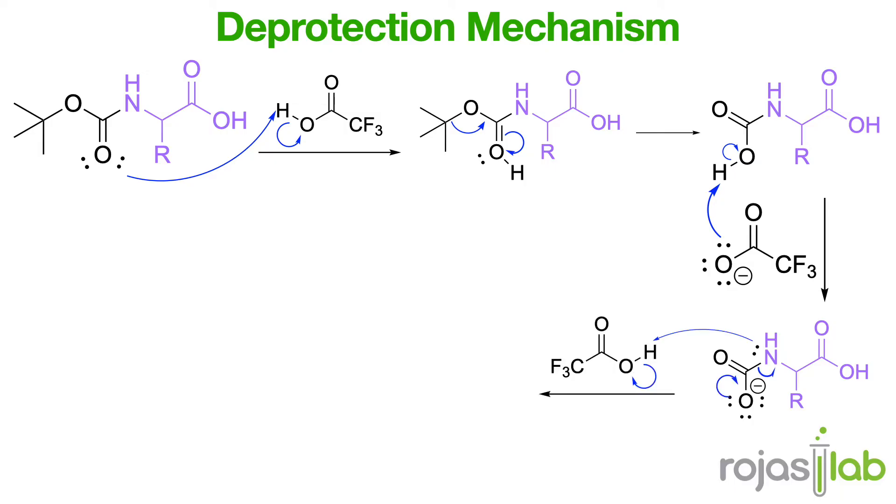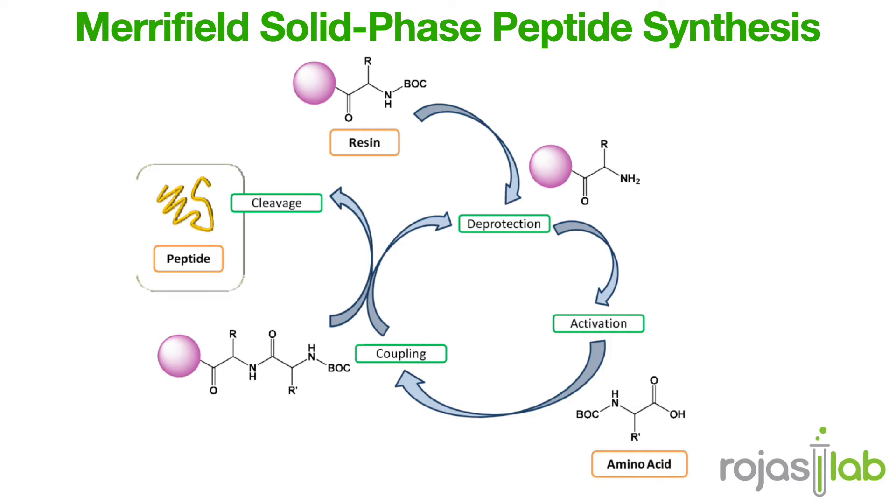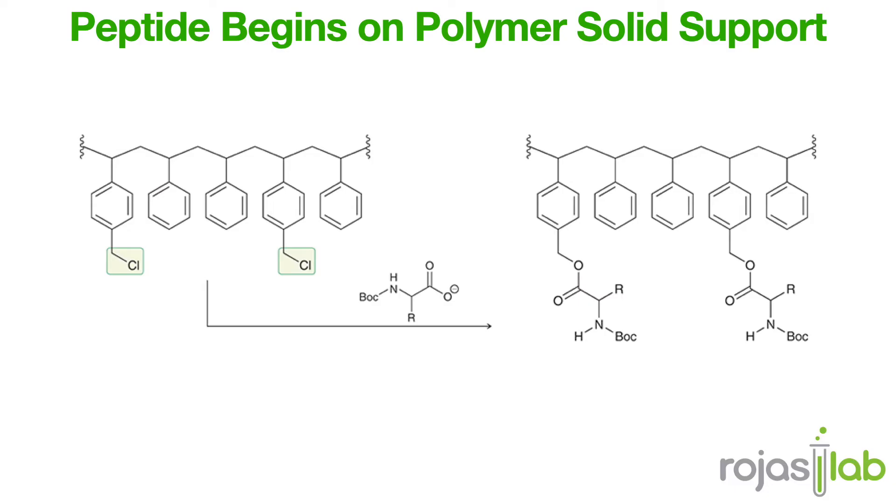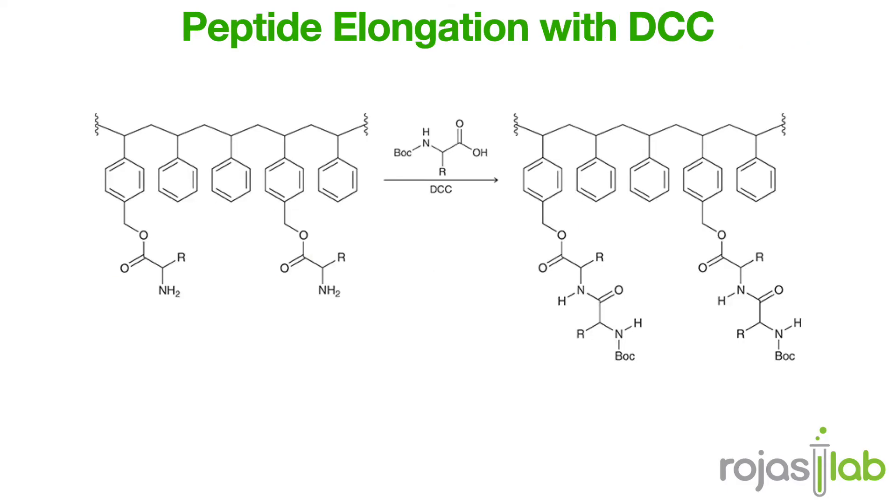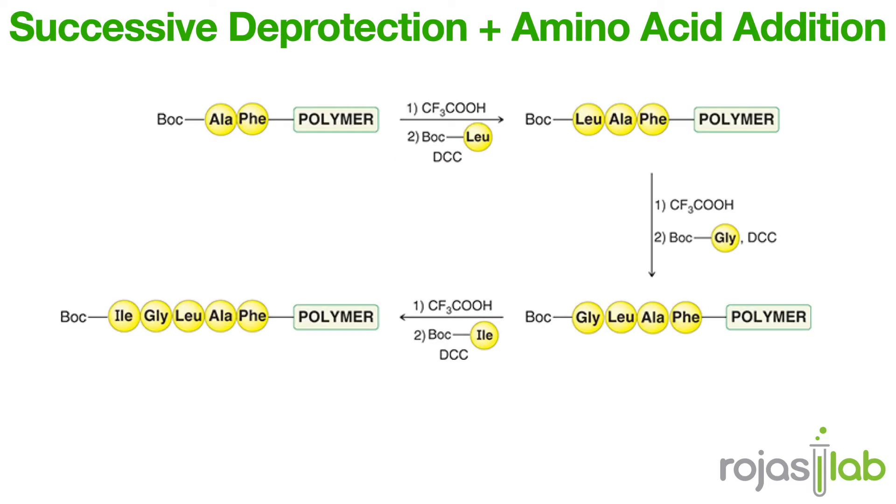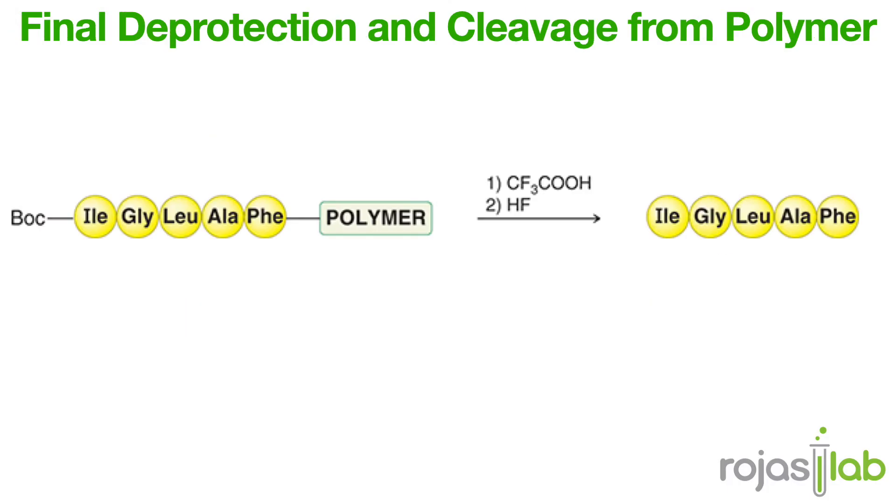In Merrifield synthesis, peptides are synthesized through solid-phase peptide synthesis, or SPPS for short. This method revolutionized peptide synthesis by enabling the stepwise assembly of peptides on a solid support, which is typically a resin bead, like a polymer. The process begins with the attachment of the C-terminal amino acid to the resin via a linker. Then, each subsequent amino acid is added one at a time, with the peptide growing in the C-to-N direction, allowing it to react with the amino group of the growing peptide chain. After each coupling step, the resin is washed to remove any unreacted reagents. Cleavage from the resin and removal of the protecting groups yield the desired peptide.